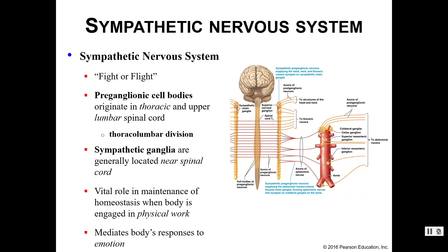The sympathetic nervous system is the fight or flight division. The preganglionic cell bodies are going to be coming from the thoracic or the upper lumbar region — the thoracic and lumbar region of the spinal cord. You'll hear the term thoracolumbar division a lot. Now the sympathetic ganglia — ganglia is just plural for ganglion — the ganglia are the little relay stations, and they are basically right next door to the spinal cord themselves.